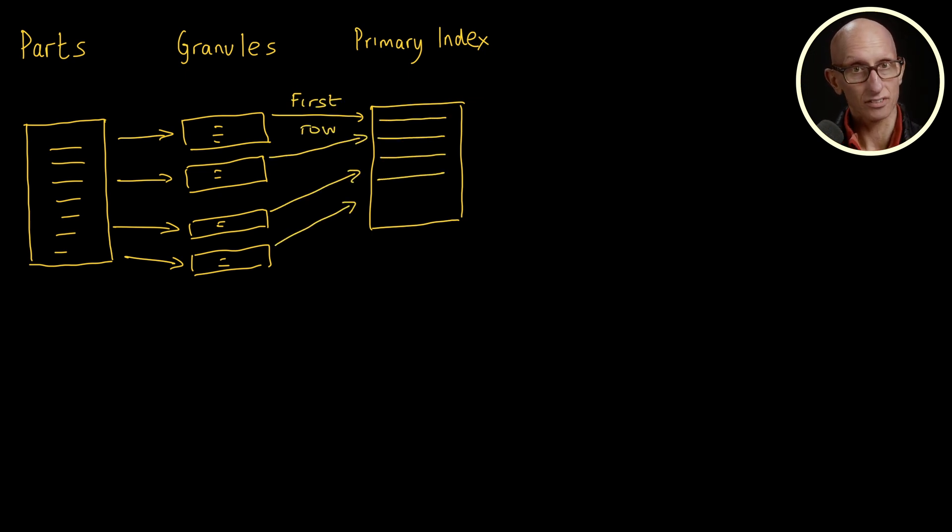At query time, the ClickHouse query engine needs to work out which granules it needs to scan to compute a result. If we run a query that filters on the primary key, the query engine can do a binary search over the index file to work out which granules can be pruned as they won't contain matching results. If we've chosen our primary key well, this will mean ignoring a lot of data resulting in a much faster query.